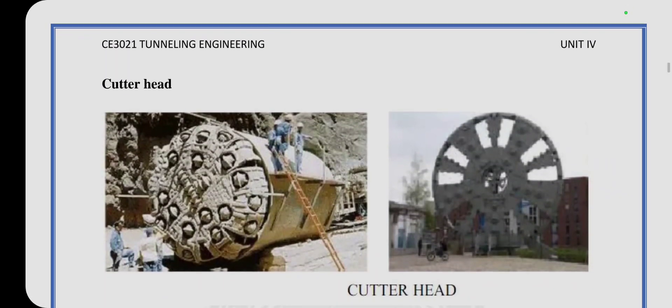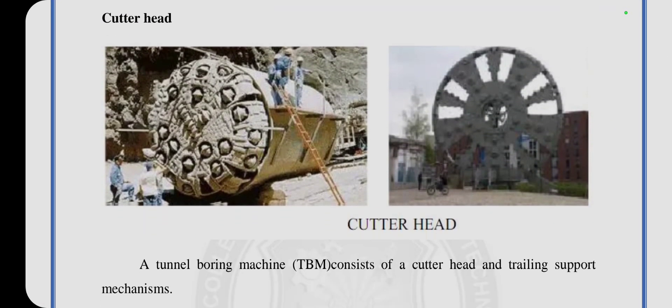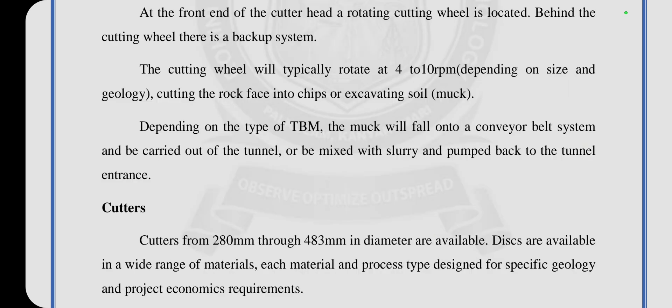This is the cutter head. The cutter head features internal boring components and trailing support mechanisms at the front end, with a rotating cutting wheel. Behind the cutting wheel there is a backup system. The cutting wheel typically rotates at around 1 to 10 RPM and carves the rock face or excavates soil. Depending on the type of TBM, the excavated material falls onto a conveyor belt and is carried out of the tunnel, or is mixed with slurry and pumped back to the tunnel entrance.